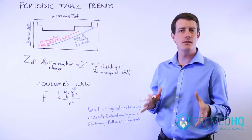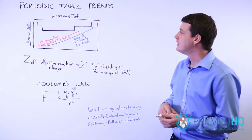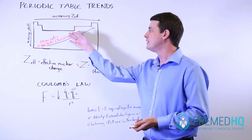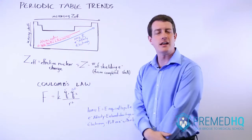There are a few trends in the periodic table that you're expected to be familiar with. These involve ionization energy, electron affinity, electronegativity, atomic radius, and metallic character.